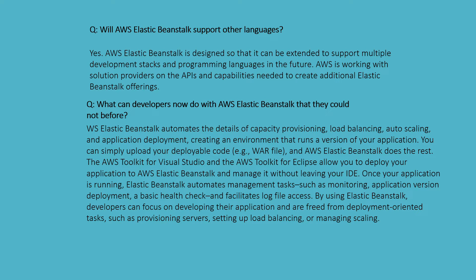The AWS Toolkit for Visual Studio and AWS Toolkit for Eclipse allow you to deploy your application to Elastic Beanstalk and manage it without leaving your IDE. Once your application is running, Elastic Beanstalk automates management tasks such as monitoring, application versioning, deployment, and basic health checks, and facilitates log file access.